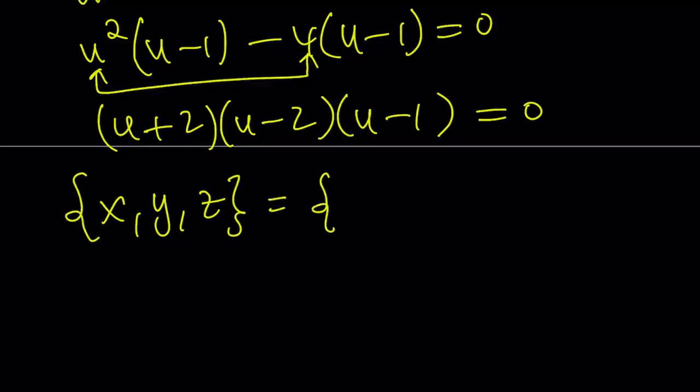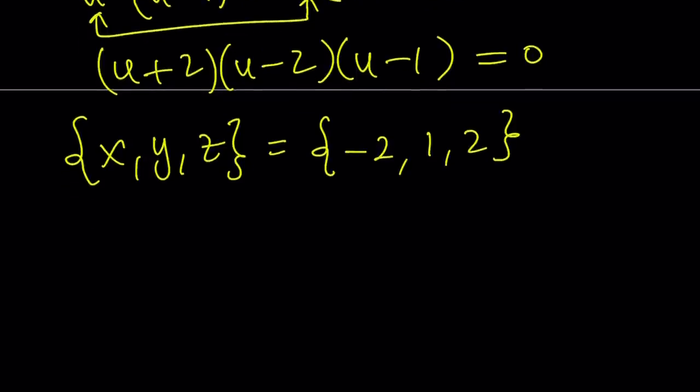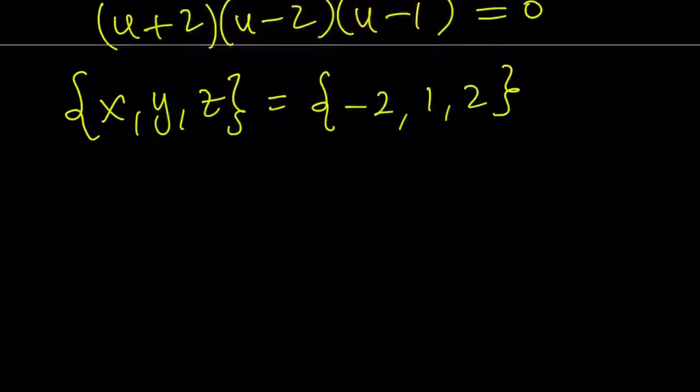The set of x, y, z, the set of solutions for x, y, z can basically be written as {-2, 1, 2}. This means that x can be negative 2 or 1 or 2, and y can be one of these and z can be one of those, as long as they're all different. And this brings us to the end of the first method. Let's go ahead and talk about the second method.